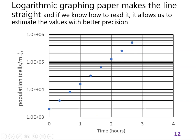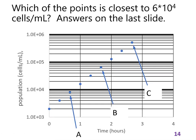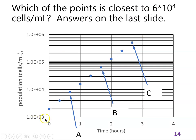The answer to that one doesn't matter much, but it was 8×10³. Slide 14 asks: which of these points is closest to 6×10⁴ cells per milliliter? The population axis is cells per milliliter, and we're just trying to figure out which point on this graph is closest to 6×10⁴.